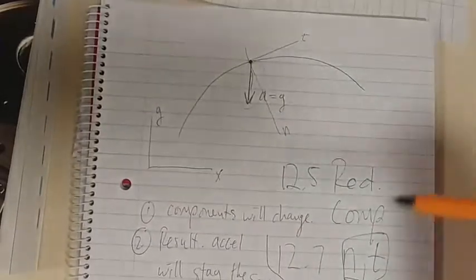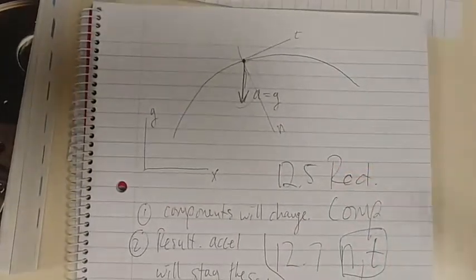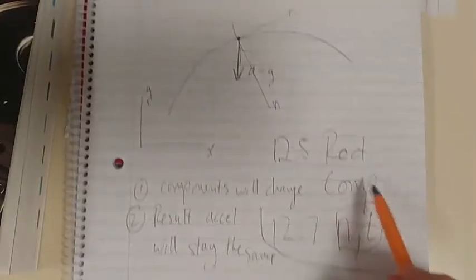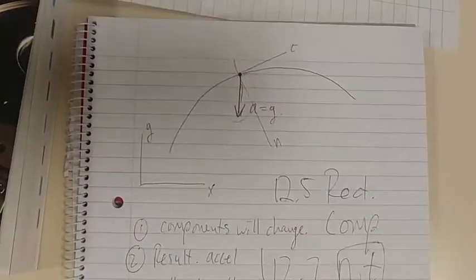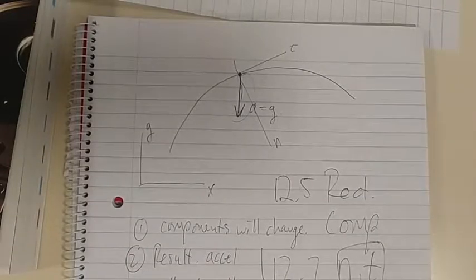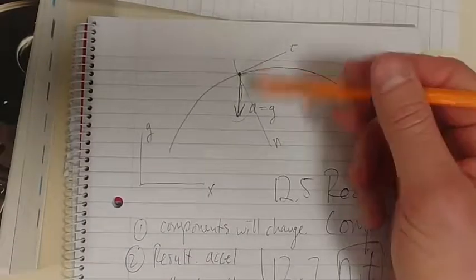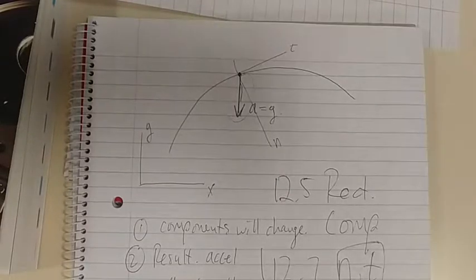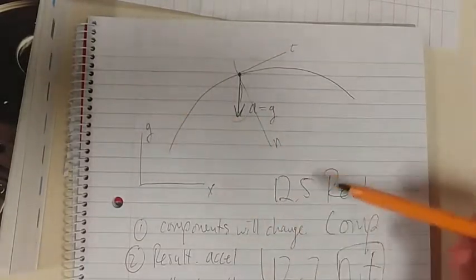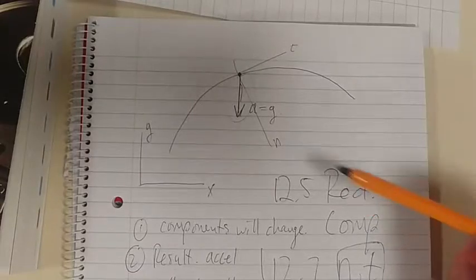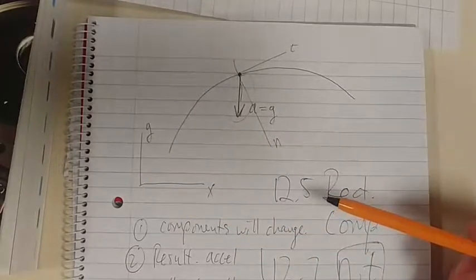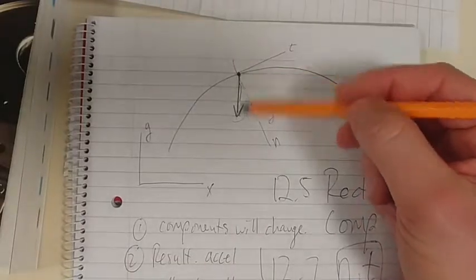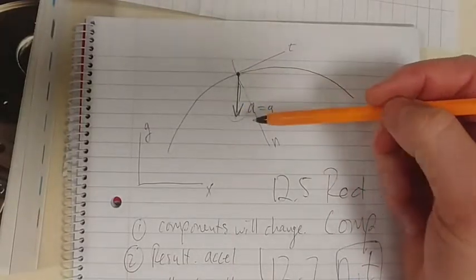So guys, the point that I'm trying to make here is whether we use our rectangular components or our normal and tangential components, it doesn't change the motion. It doesn't change the resultant acceleration. You don't just suddenly change the resultant acceleration because you're changing the coordinate system. We're just using a different coordinate system based on the information. But the resultant acceleration vector will not change.